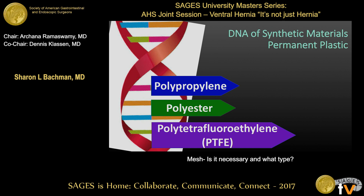Permanent plastic materials have been the mainstay of what we've used. We honestly don't know how long a piece of mesh needs to be present in order to repair a hernia. But if you look at those studies where hernia recurrence rate continues to increase over time, it does suggest that a permanent material might be what we need. The big three are polypropylene, polyester, and polytetrafluoroethylene — or PTFE. That's what most of our mesh is built off of right now. The first question to ask a company representative is: which plastic is it?